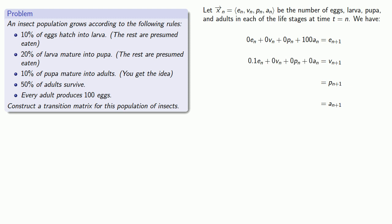How about the number of pupae? The number of pupae are going to come from the larvae, and 20% of the larvae mature into pupae. And so that gives us the number of pupae, again including all of our other terms with coefficients of zero as necessary.